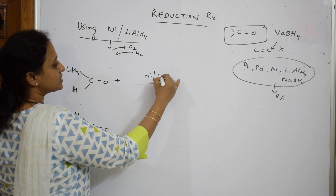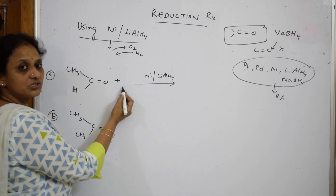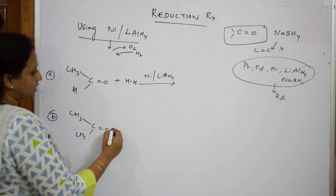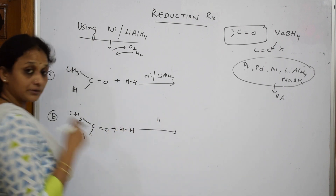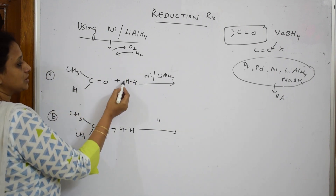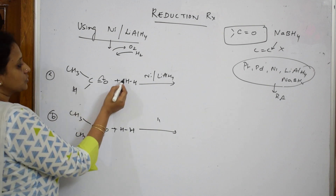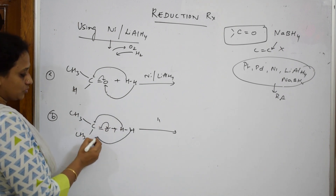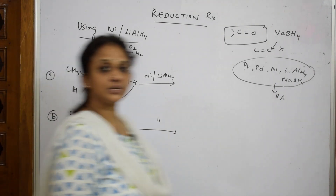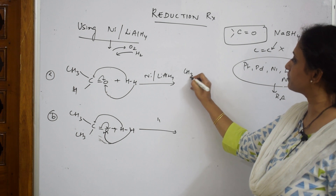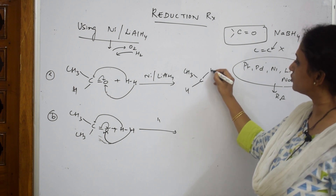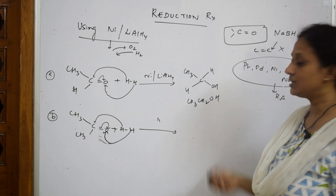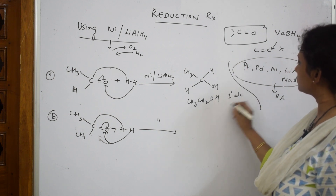When you see nickel in the paper, that means you have to add hydrogen. So I am writing hydrogen as H and H for the aldehyde, and H and H for the ketone as well. With lithium aluminium hydride, one hydrogen shifts to the carbon and one more hydrogen shifts to the oxygen. So the product you get is CH3–CH–OH with one hydrogen, which is CH3CH2OH — that is ethanol, a primary alcohol.